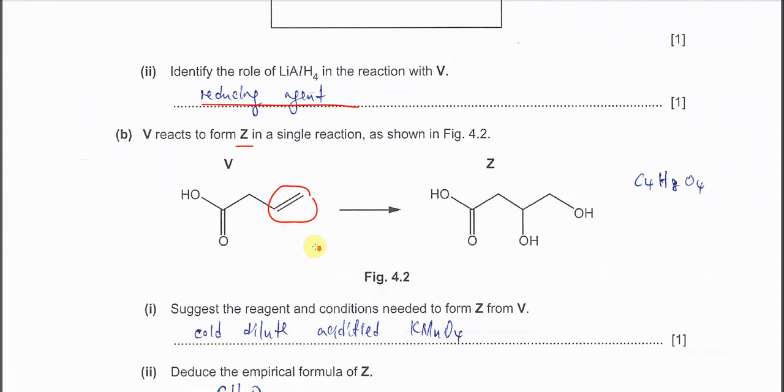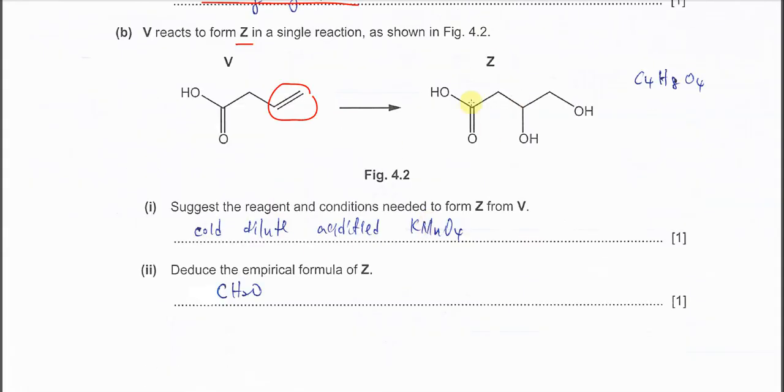Suggest the reagent and conditions needed to form Z from V. It's cold dilute - you must put acidified. Without acid, permanganate cannot function. Every time when you use permanganate as oxidizing agent, you must put acidified.